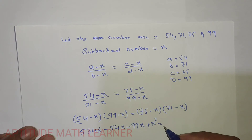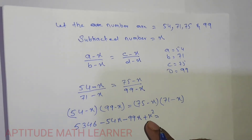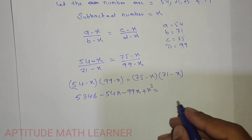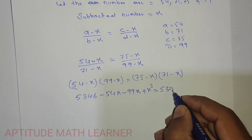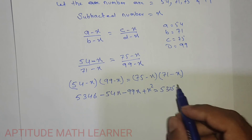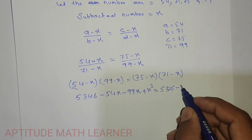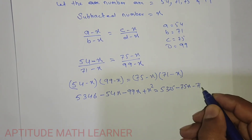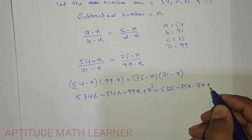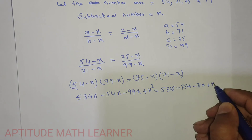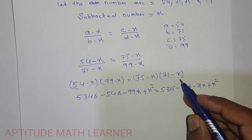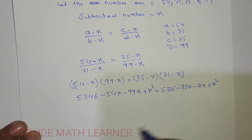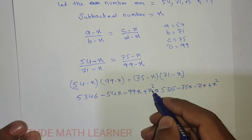The right side becomes: 75 multiplied by 71 equals 5325, then minus 75x, minus 71x, and minus x times minus x gives plus x squared. The x squared terms appear on both sides.